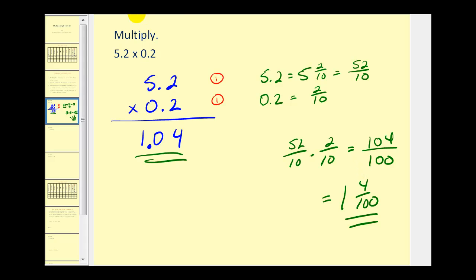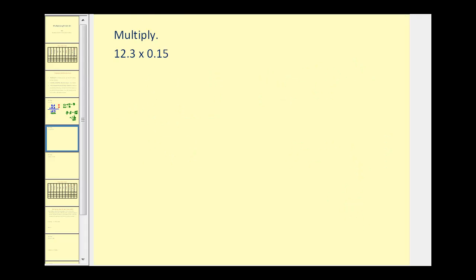Let's take a look at another one: 12.3 times 0.15. Notice that it's not important to line up the decimal points as we did when adding or subtracting. Now we're going to multiply as we normally would, ignoring the decimals.